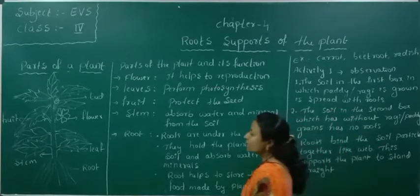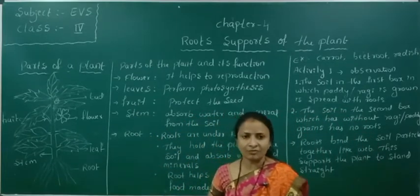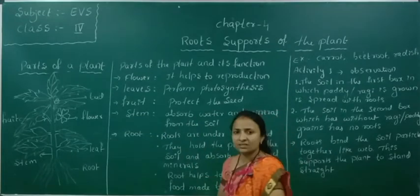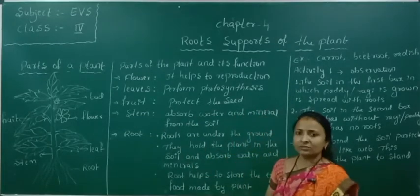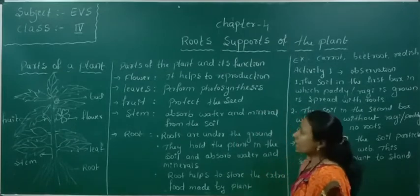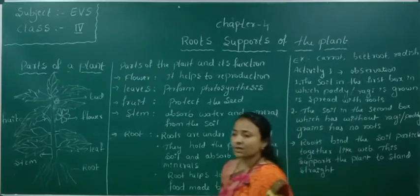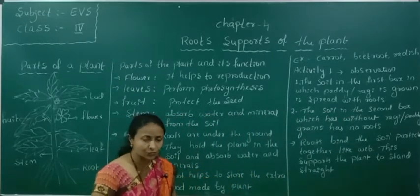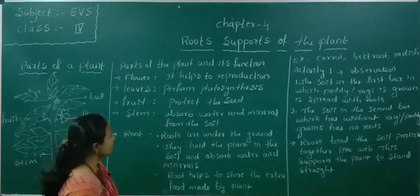Each part of the plant has a different type of function. What are those functions? Let us see them one by one. Flowers help with reproduction. These flowers help with the reproduction system.